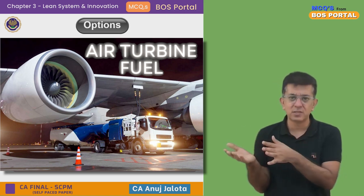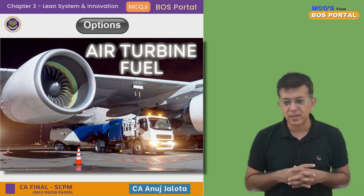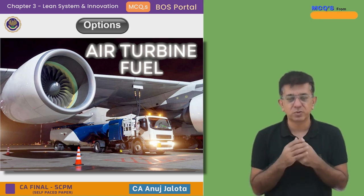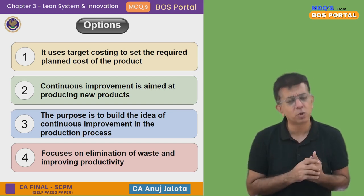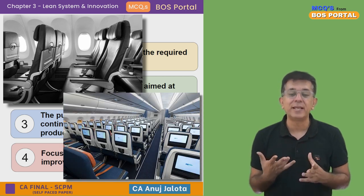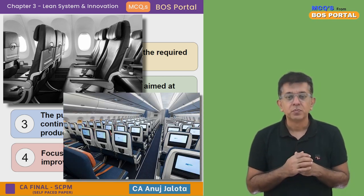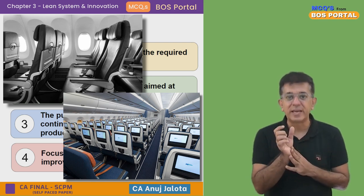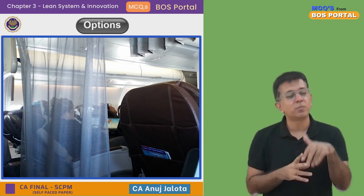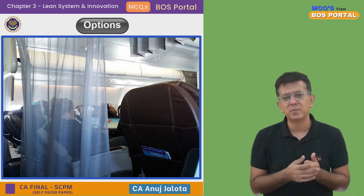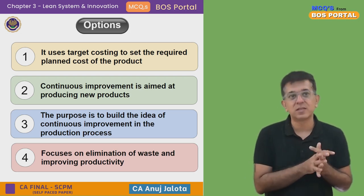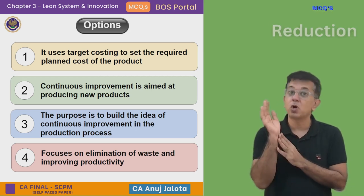One of the biggest costs for airline companies is Air Turbine Fuel (ATF). Its consumption is directly proportional to the weight of the aircraft — more weight means more ATF consumption and more cost. So companies have done a lot over the last 40 years: iron seats have been replaced by titanium seats, which don't rust and are much lighter and stronger. Curtains in aeroplanes have been replaced by plastic sheets to reduce weight. These are all examples of Kaizen Costing in practice.